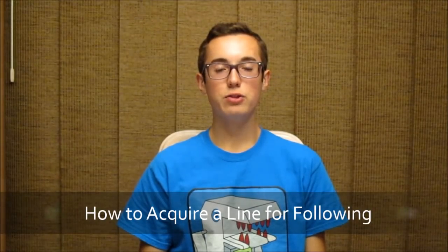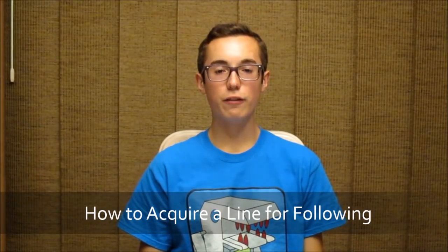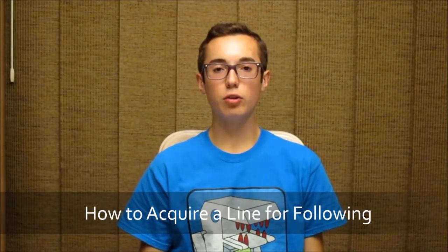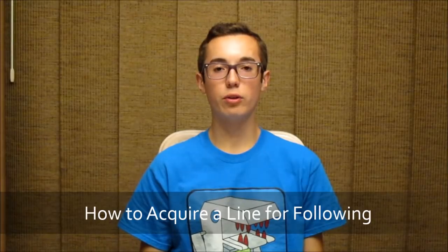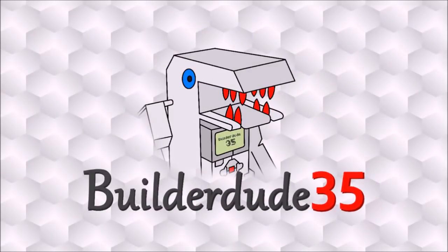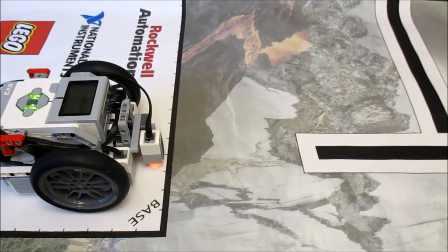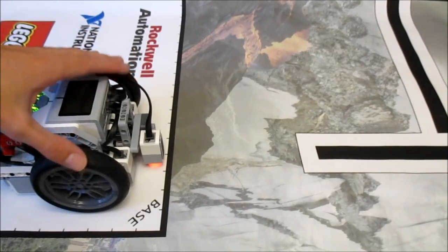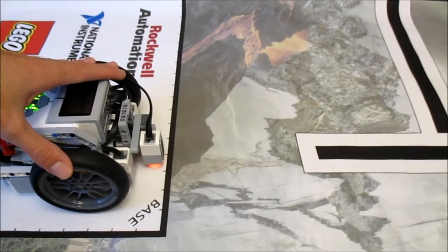Hey everyone, today I'm going to be addressing a very important problem in line following: how do you get your robot to acquire the line in order to follow it? Here is the problem we're going to be addressing today. You have your FLL robot within the base and you want to follow this line that's right here.